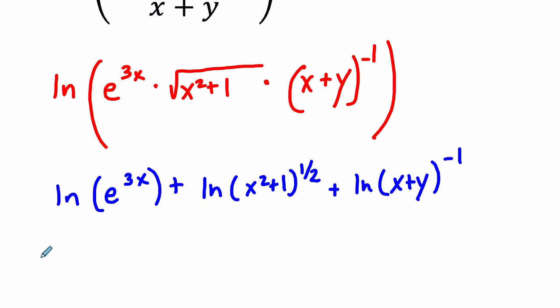So the next law I'm going to use is where I bring the exponents down in front. So we have 3x times the natural log of e plus 1 half times the natural log of x squared plus 1, minus, because negative 1 comes down, the natural log of x plus y.